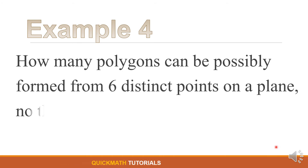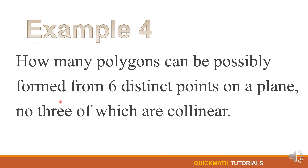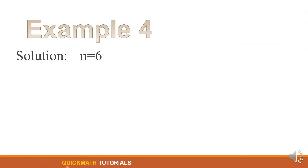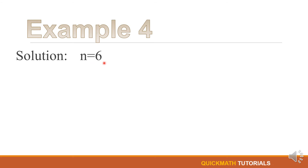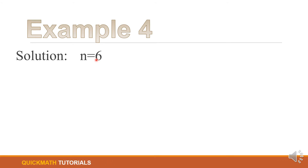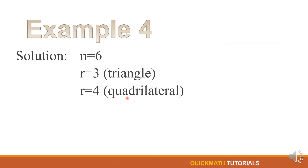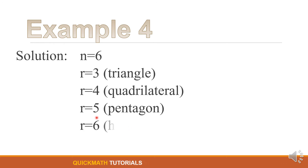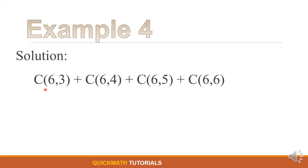For our last example: How many polygons can possibly be formed from 6 distinct points on a plane, no 3 of which are collinear? We are given 6 distinct points and asked to form polygons. Polygons differ by the number of sides: triangle (3 sides), quadrilateral (4 sides), pentagon (5 sides), and hexagon (6 sides). We will solve for the combination for each polygon type.